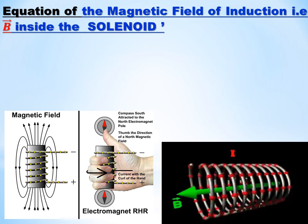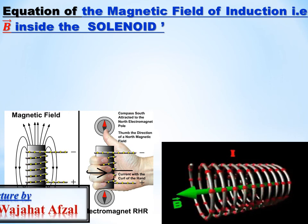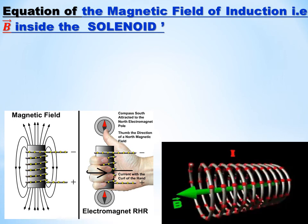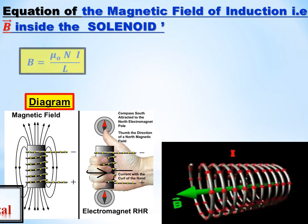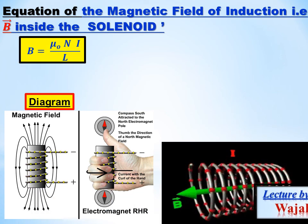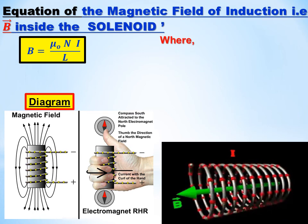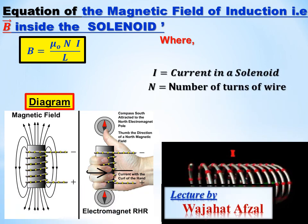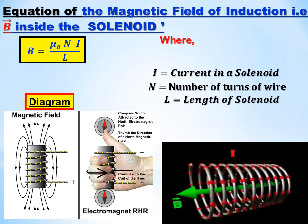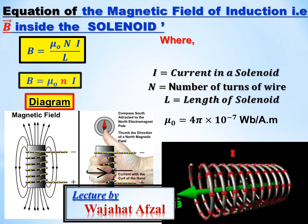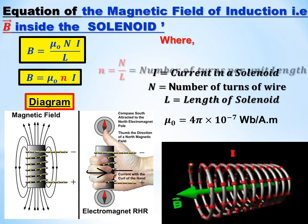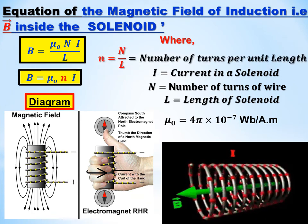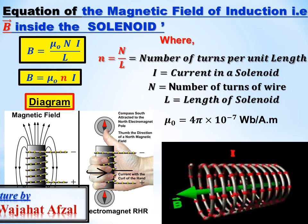These are two animated diagrams where you can see the amount of current flowing. Using the right-hand rule, if you curl your right-hand fingers in the direction of current flow, the thumb represents the direction of the magnetic field. The formula is: B = μ₀NI / L, where B is the magnetic field of induction, μ₀ is the permeability constant, I is the current, N is the number of turns, and L is the length of the solenoid. We can also write this as B = μ₀nI, where small n is number of turns per unit length.